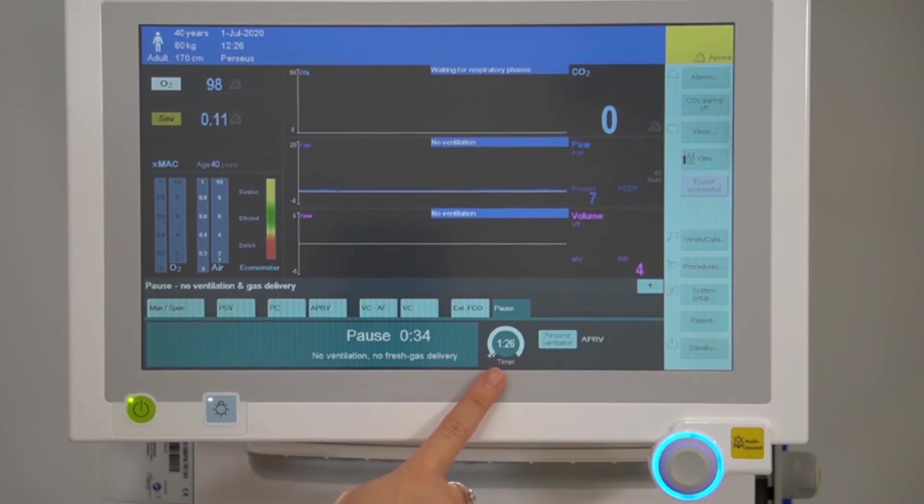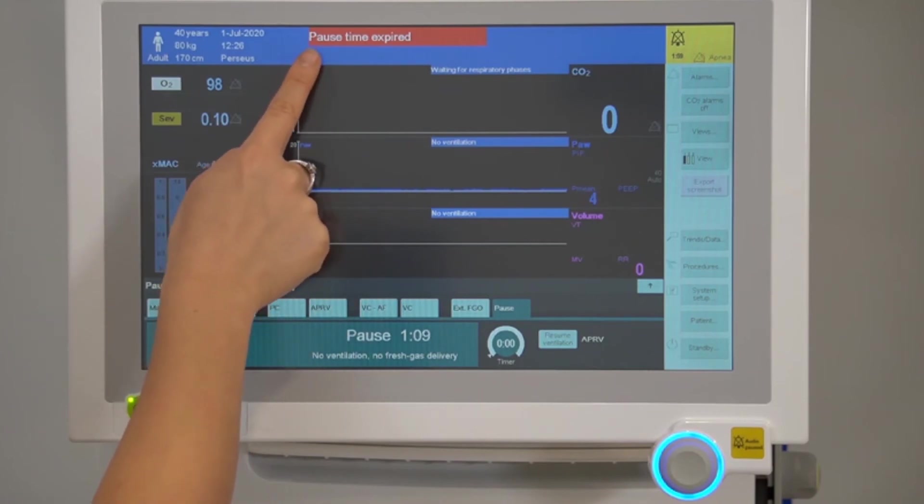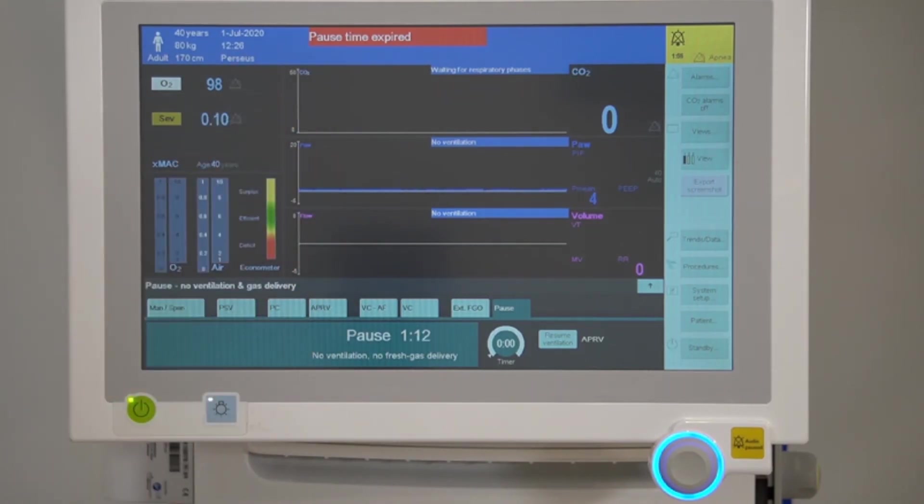You'll notice that a two-minute safety time limit is triggered when entering pause mode. When the timer is up, a pause time expired high priority message will be displayed on the screen.